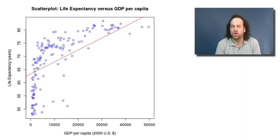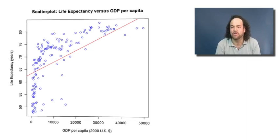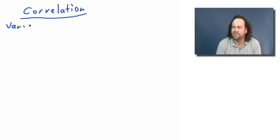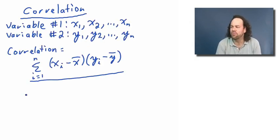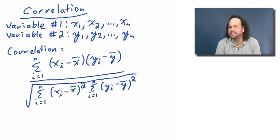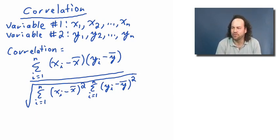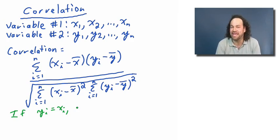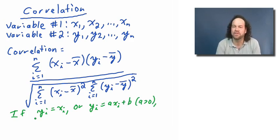We can also compute something called the correlation between these two quantitative variables. The correlation has a somewhat complicated formula — it has to do with the products of the values of the data minus their means, and then we normalize it by dividing by the square root of the sums of the square deviations. One way to get some intuition about it: if the variables Yi were actually the same as the Xi — that is, if these two quantitative variables had a positive linear relationship — then the correlation would be equal to plus one, and we'd say we have a perfect positive correlation.